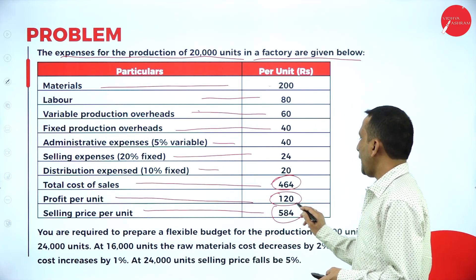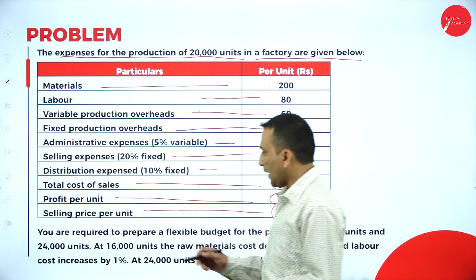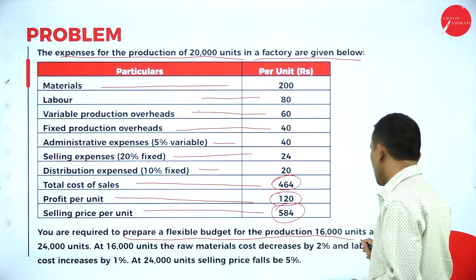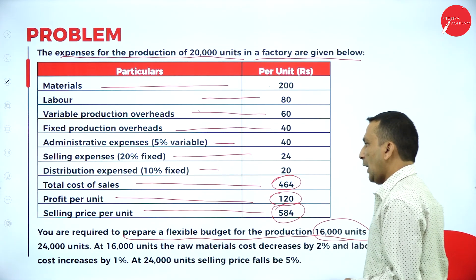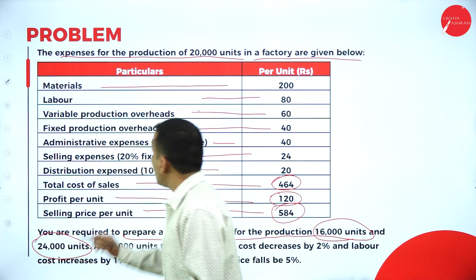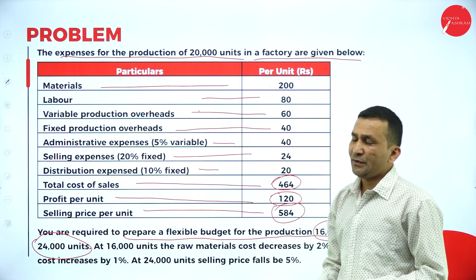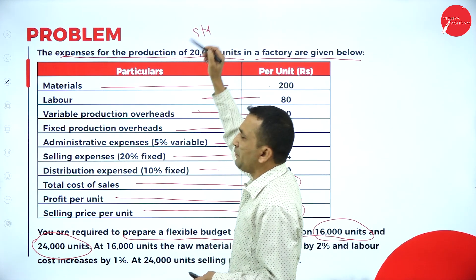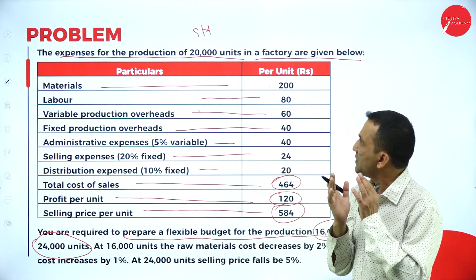The distribution expense is 10 percent fixed and 90 percent variable. The total cost of sales is 464, profit per unit is 120, and selling price per unit is 584. You are required to prepare a flexible budget for production of 16,000 and 24,000 units. The 20,000 unit figure is the standard or fixed budget figure we are comparing against.